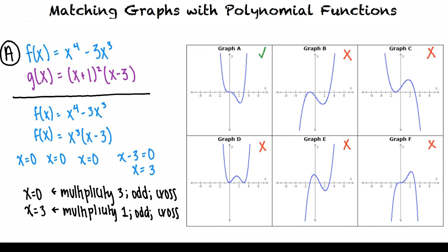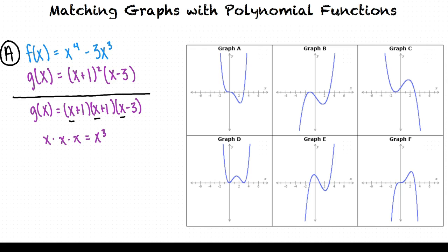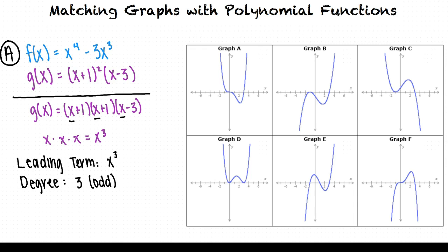Now let's move on to g(x), which equals the quantity x plus one squared times the quantity x minus three. First we want to find the leading term of g(x). We can do this by multiplying the highest degree term from each factor. Because the quantity x plus one is squared, that tells us we really have two factors that are x plus one. In each of the three factors, the highest degree term is x, so we multiply x times x times x, which equals x cubed. This tells us the leading term of g(x) is x cubed.